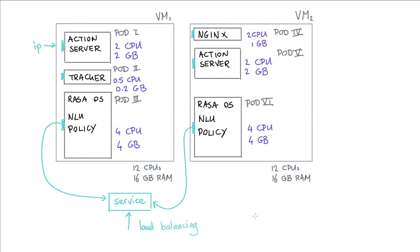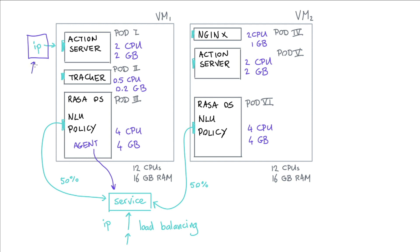We have to remember that VMs might go down in production, so we can't presume internal pod IP addresses remain the same — but a service guarantees that. Another benefit of the service abstraction is load balancing: when traffic comes in, we can make sure 50% goes to one pod and 50% to the other. In a Rasa deployment you'll have more than one service, and it's the only way to define a static IP address so that the Rasa agent can locate the action server for custom actions.